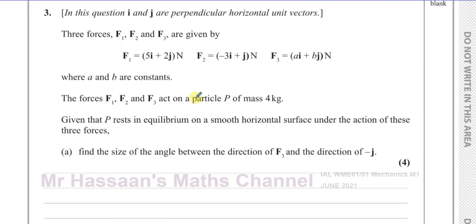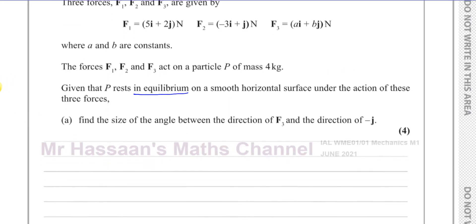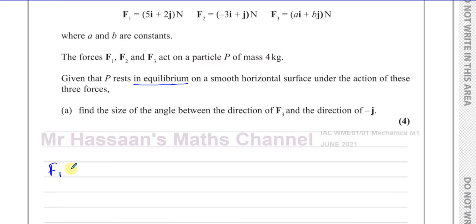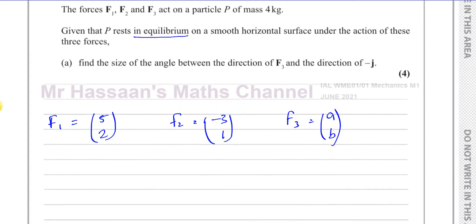So basically these three forces acting on this particle of mass 4 kilograms are in equilibrium. So if you add these three forces together, the resultant will be zero. I like to write the forces in terms of column vectors.